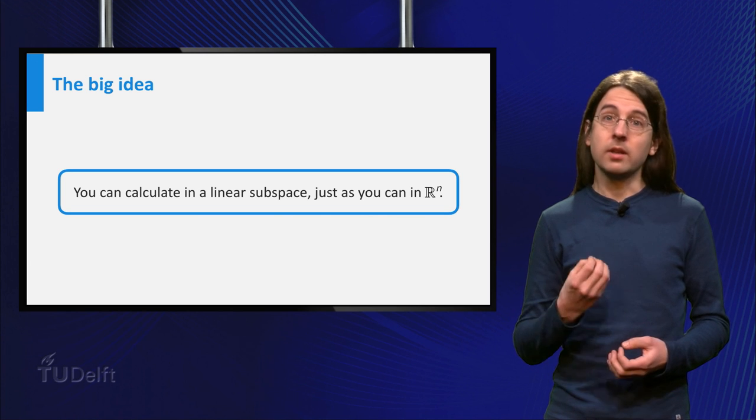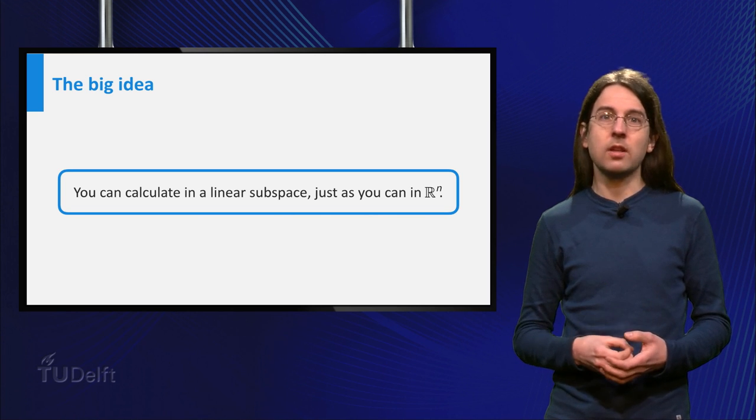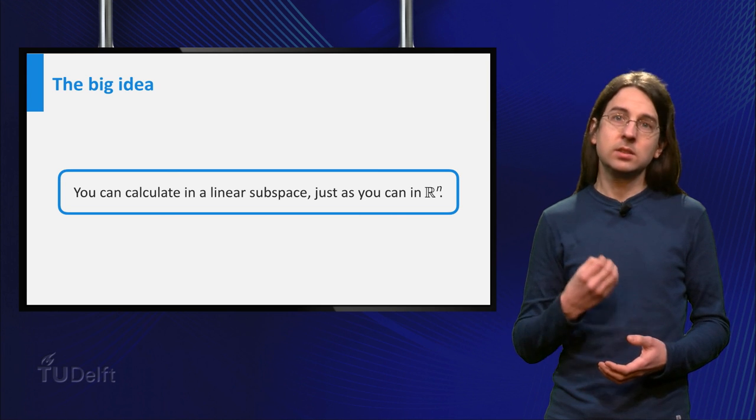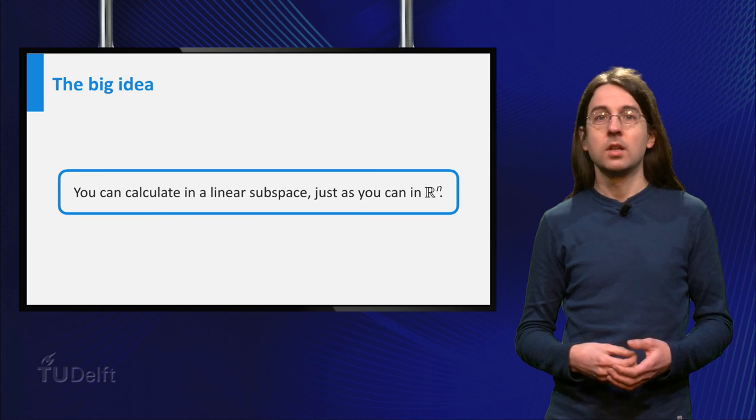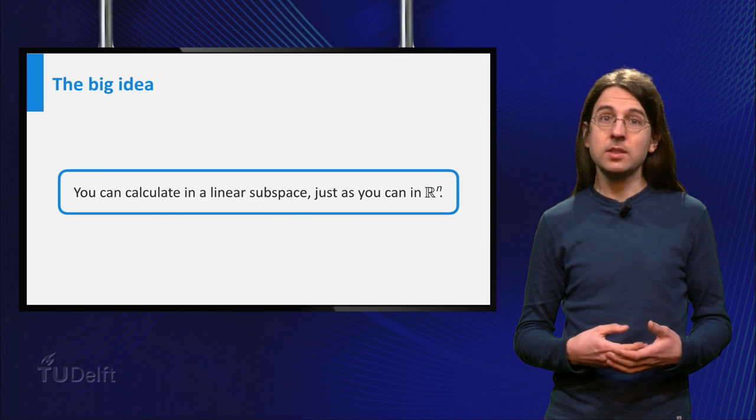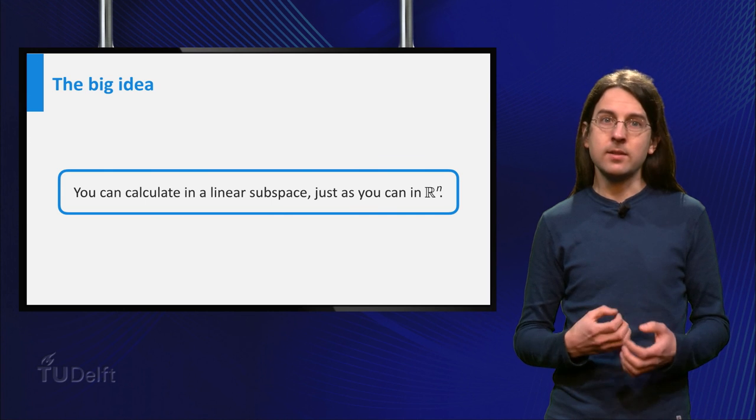For example you can add and multiply vectors on a line through the origin, just as you can add and multiply numbers on the real line R, and you can calculate with the vectors in a plane through the origin as if it was R2.